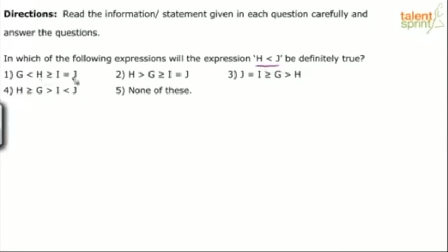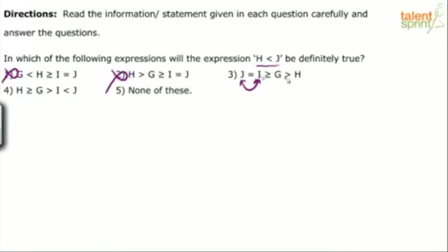If you see h is greater than or equal to j, so first one is wrong. h is greater than j — second one is wrong. In the third option, h is less than j; h less than j less than or equal to i. Anyway j is equal to i, so you can interchange these two. So h less than j, and j less than or equal to i. So definitely h is less than j. Third option is the answer.